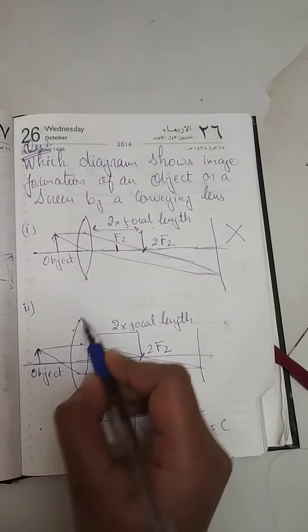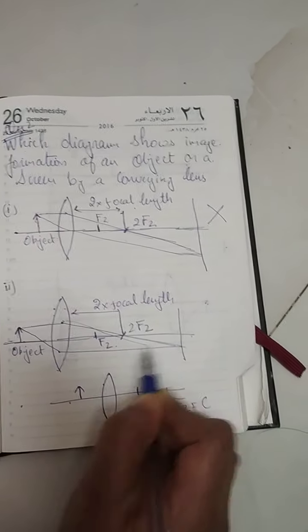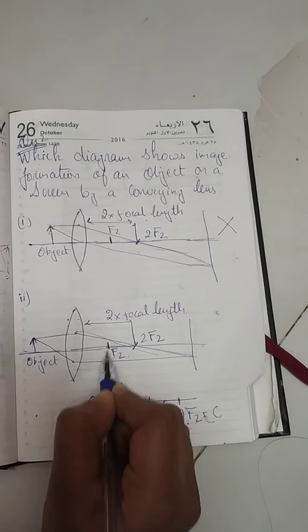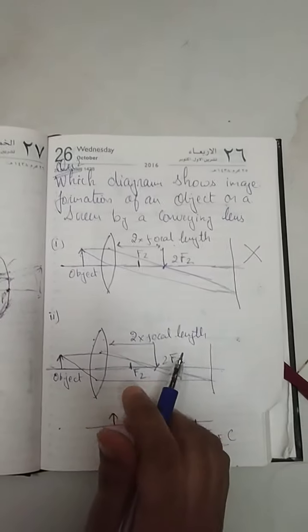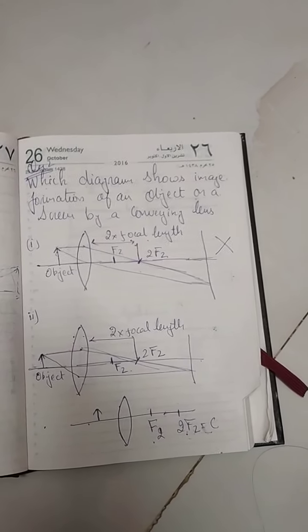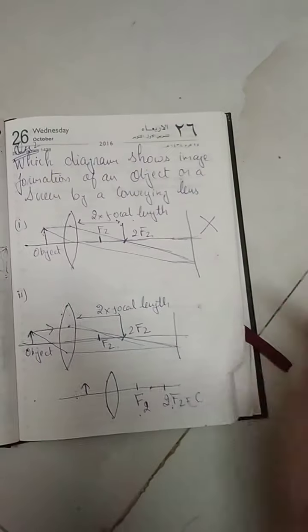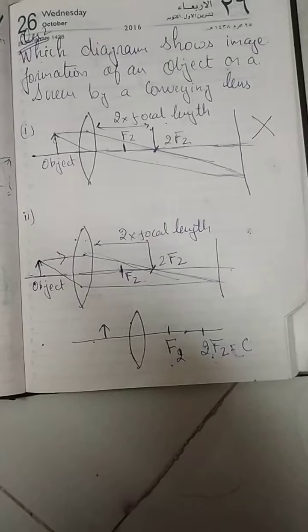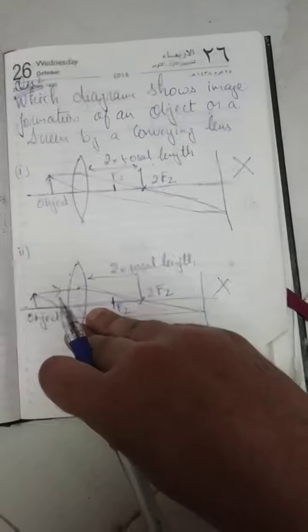The second one is the same thing. After refraction it's passing from 2f2, the center of curvature. It should pass from f2, the focus. It's a rule of convex lens or any mirror - if a line is parallel to the principal axis, after refraction or reflection it always passes from the focus. So this diagram is also incorrect.